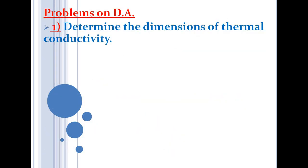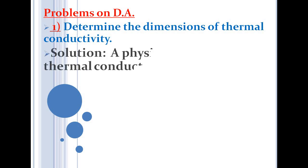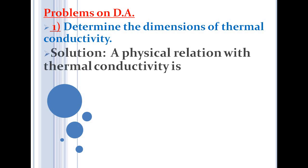The first problem: determine the dimensions of thermal conductivity. The physical relation involving thermal conductivity is Q = K·A·(θ₁ − θ₂)·D/t, where Q is heat, K is thermal conductivity, A is area, (θ₁ − θ₂) is the temperature difference, D is thickness, and t is time.